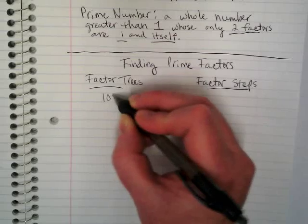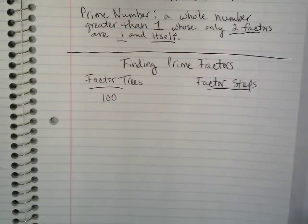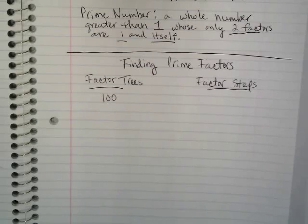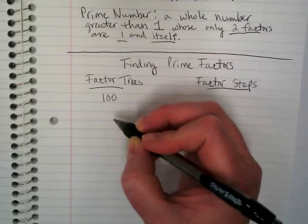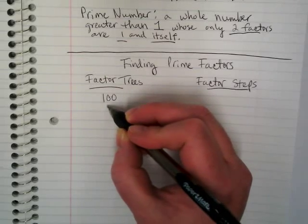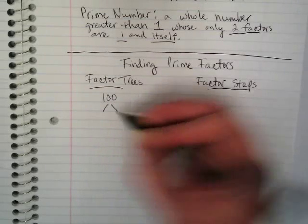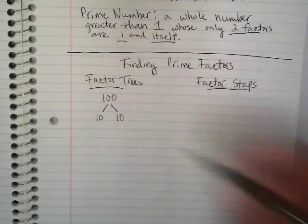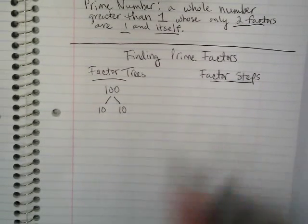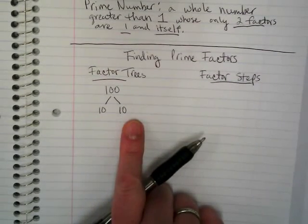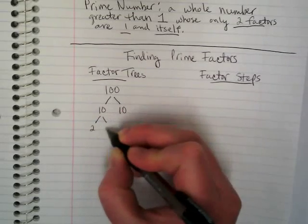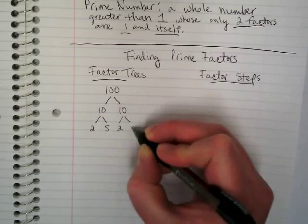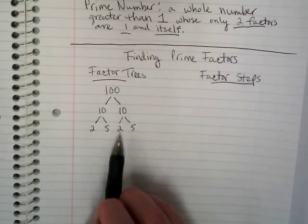Let's start off with the number 100. The idea is we're going to keep factoring this down with branches until we get to the end of our factor tree, which is when we have only prime factors. Each branch ends when we end up with a 1 and some other number. Starting with 100, I'm going to say 10 times 10, because that's the first thing I think of. Neither one of these numbers are prime, so I'm going to break them down into the next branch. Both 10s are 2 times 5 and 2 times 5.